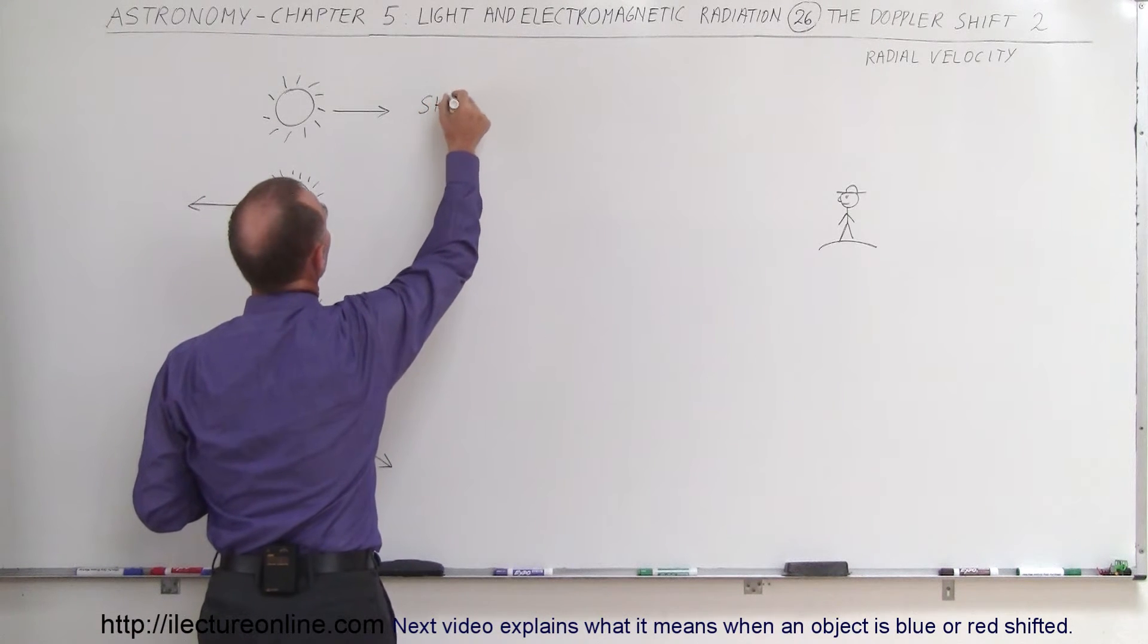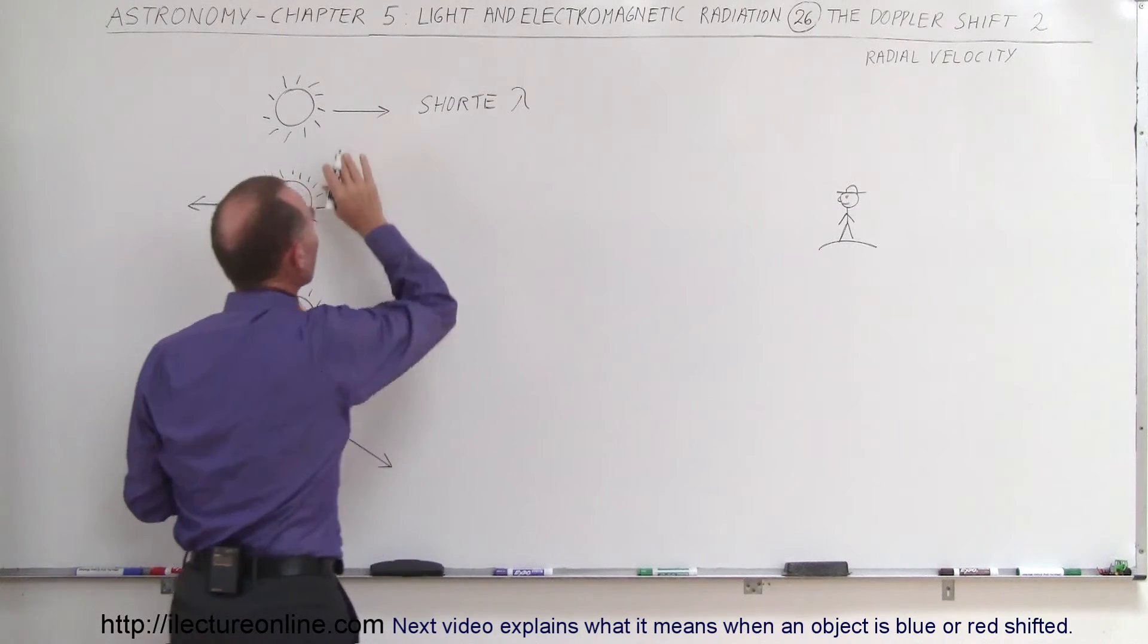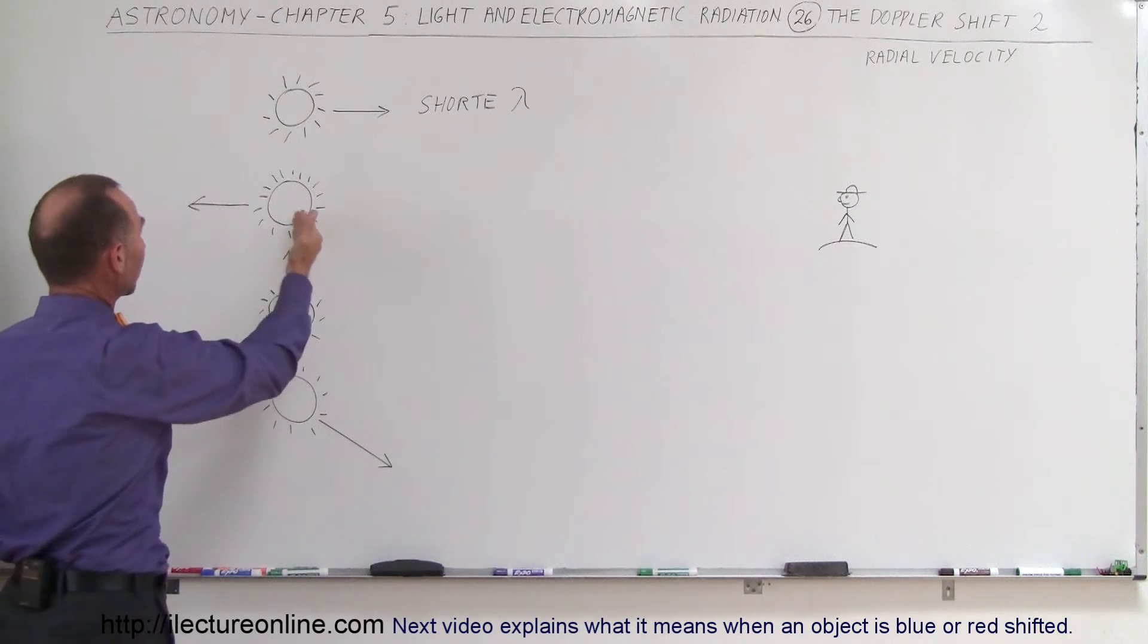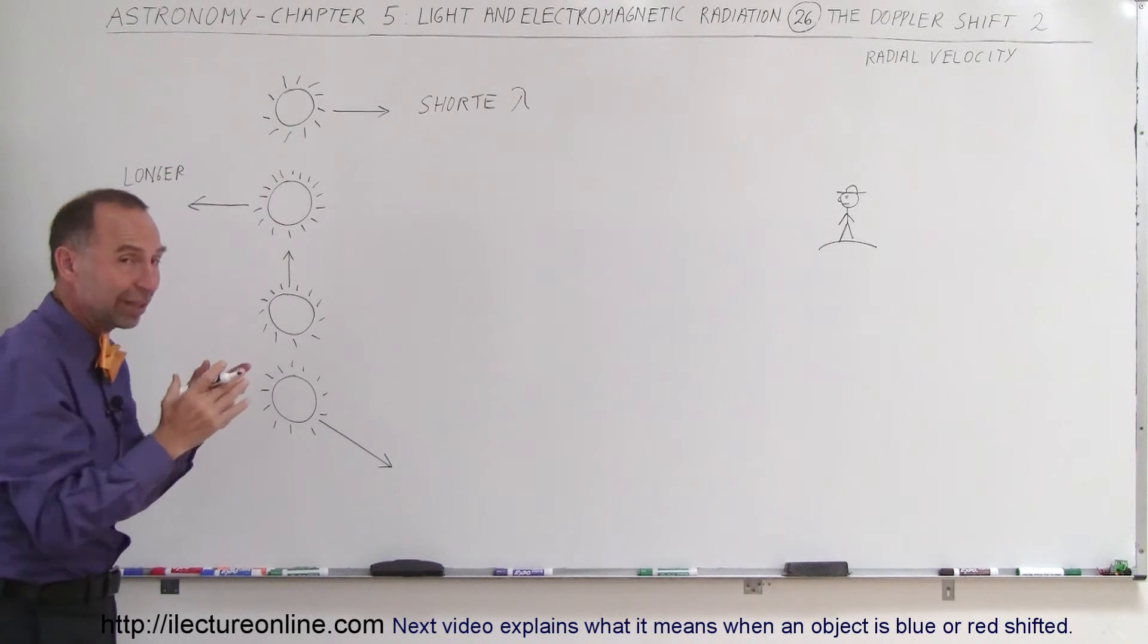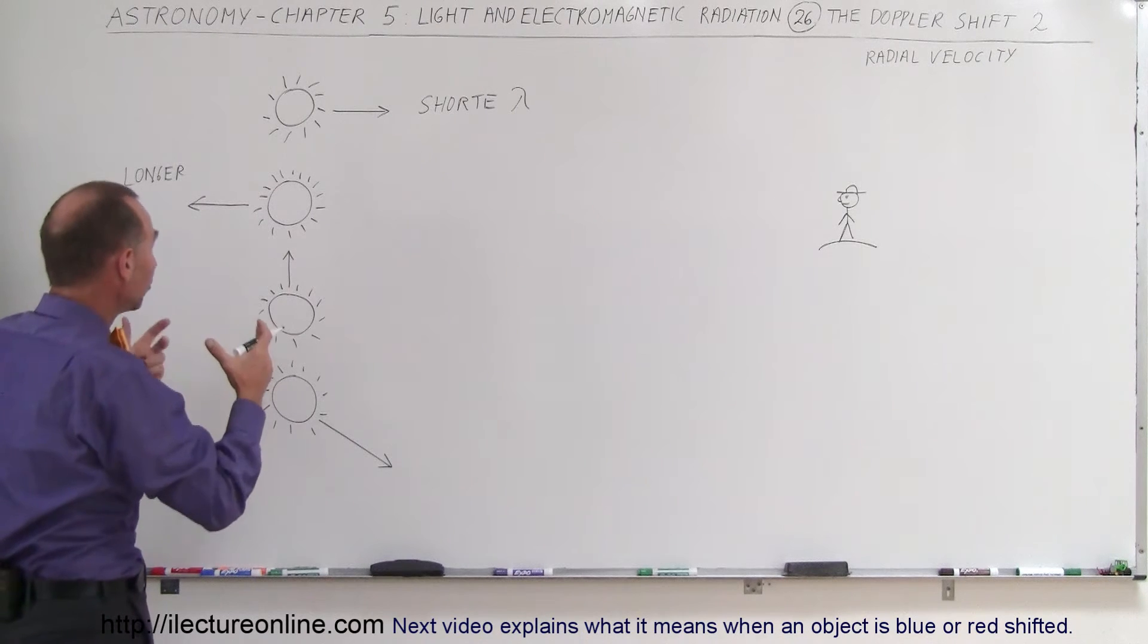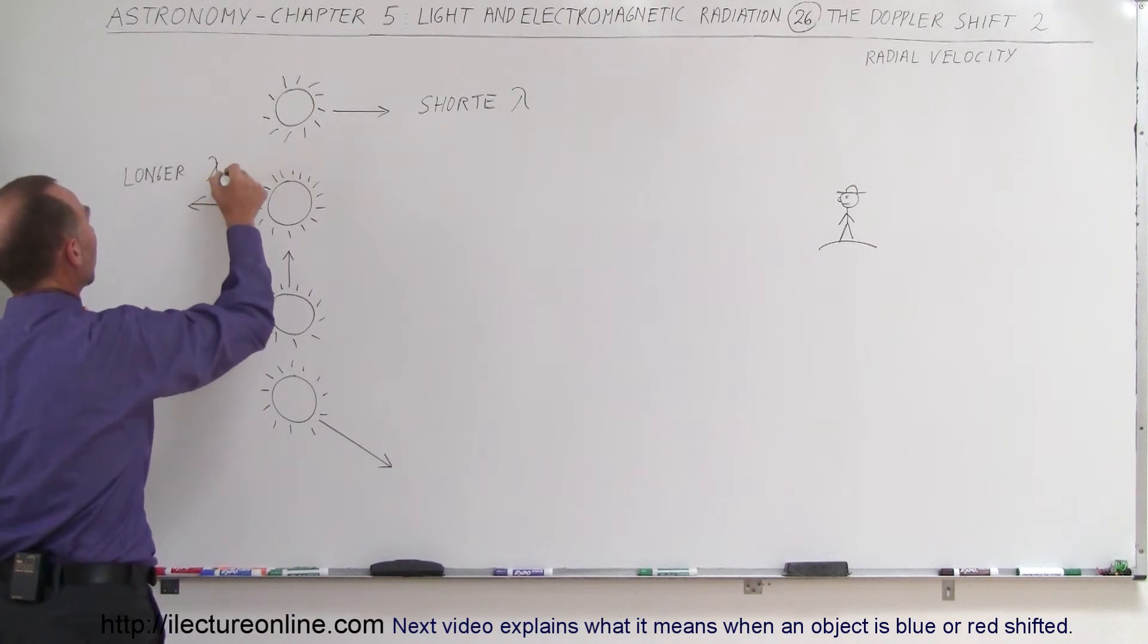So shorter lambda and that would be an indication that the object is moving towards us. In this case here where the object is moving away from us we would see a longer wavelength, and the shift of that wavelength, depending upon how much it shifted, we can determine the velocity away from us. So longer wavelength in that case.